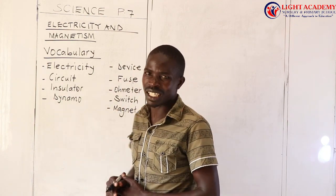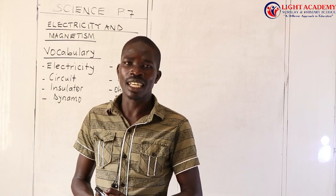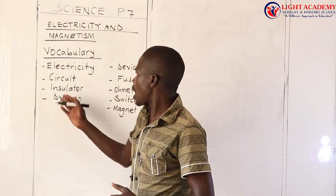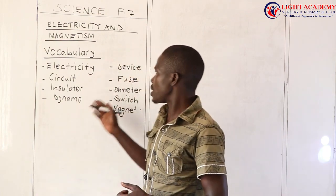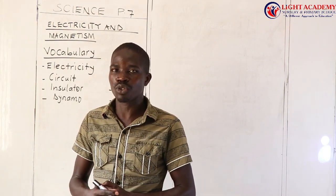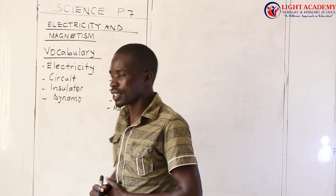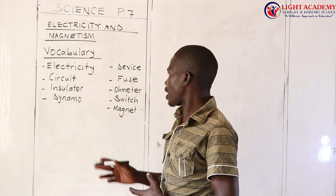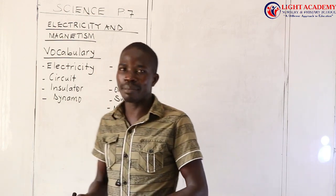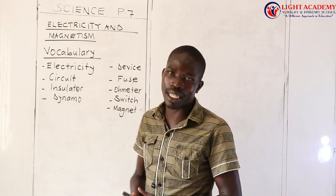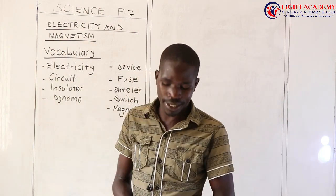A fuse is a device on an electric circuit that breaks the circuit in case there is too much flow of current. An ommeter is also part of an electric circuit that measures electric resistance. A switch breaks and completes the circuit at the user's wish. A magnet is a piece of metal that attracts other magnetic substances.